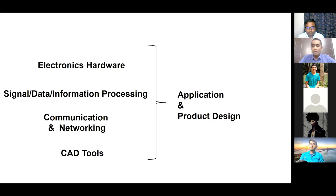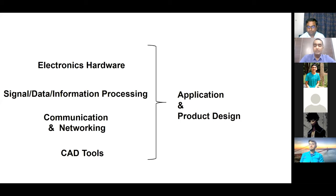The second part is storage — once you have acquired the signal, it has to be stored. When we talk about computer or laptop configuration, we talk about RAM and hard disk — that is the memory. There is electronic hardware responsible for storing data. The next part is processing the information — if you have acquired data from the external world, there is processing involved: video compression, audio compression, filtering of images and audio signals.